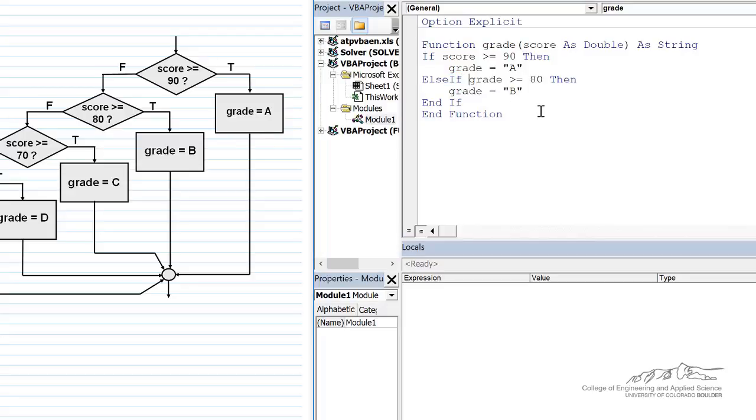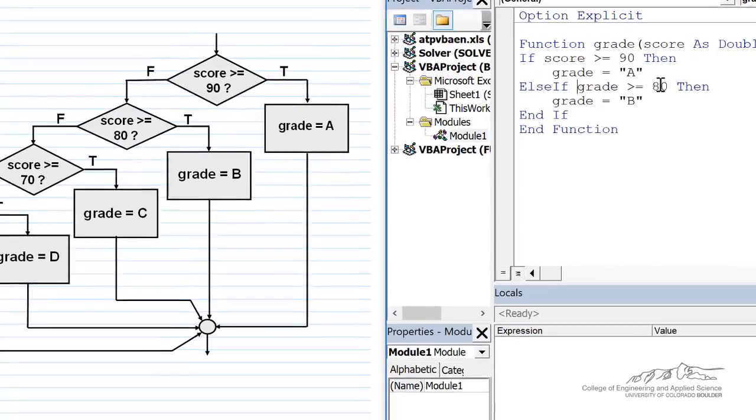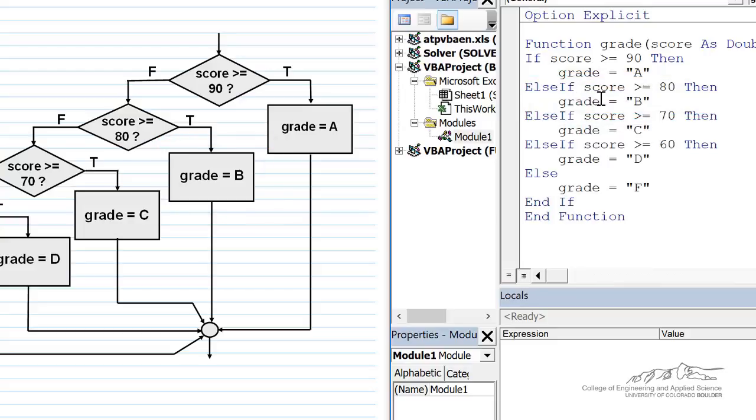Else if, so this is what makes this different from the previous two-way if-then. Else if score greater than or equal to 80, then grade equals B. And I did have one error here. I had grade, so I've corrected that. This should be score.